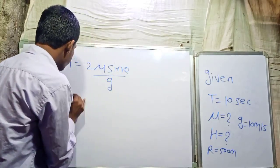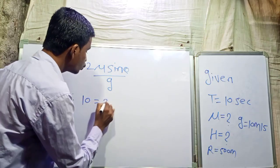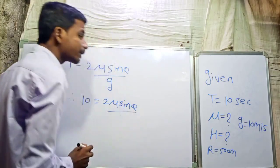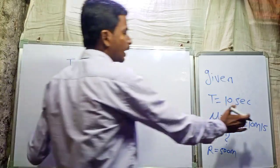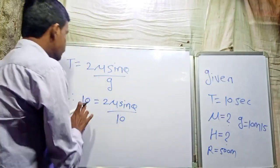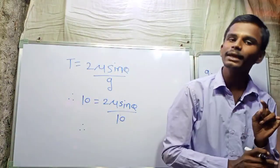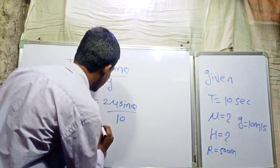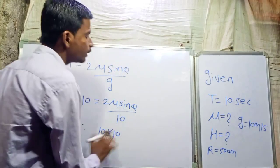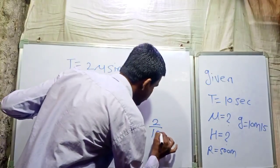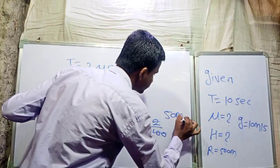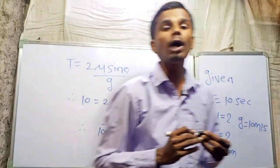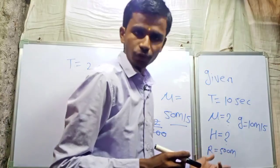So T is equal to 2u sinθ by g. Therefore, 10 = 2u sinθ / g, where g is 10 meters per second squared. Rearranging: u sinθ = 10 × 10 / 2 = 50. So u = 50 meters per second. That is our u value, which we need to proceed with finding the height.